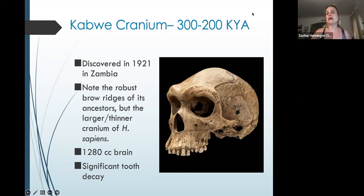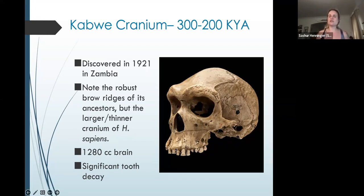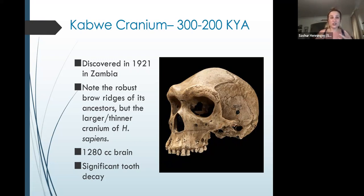The Kabwe cranium is another African example, 300 to about 200,000 years old from Zambia. Note again, very robust brow ridges of the ancestors, but the cranium is thinner and larger than Homo erectus — much more similar to Homo sapiens. Brain size is quite large as well. And there's significant tooth decay, which implies we're starting to live longer — long enough that our teeth are starting to decay and fall out. We're living into our elderly ages.